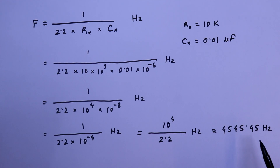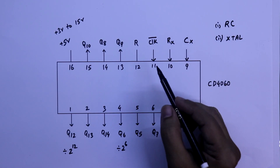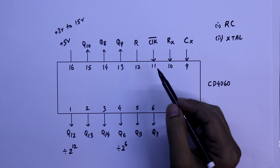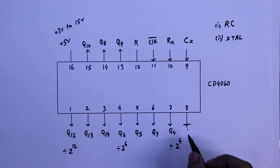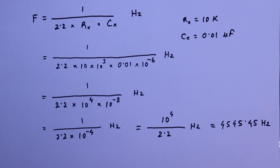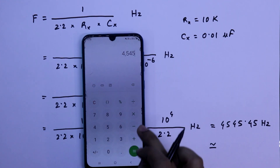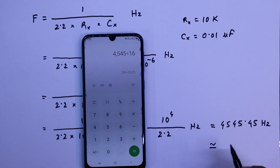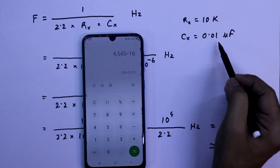Now we will verify this value on the oscilloscope. Pin number 11 is the input and we will check the frequency at one of the output pins — let's say pin number 7, which is Q4, divided by 2 to the power 4, which equals 16. So the output frequency will be 4545 divided by 16, which is approximately 284 Hz. We should get approximately 284 Hz with RX = 10K and CX = 0.01 microfarad.